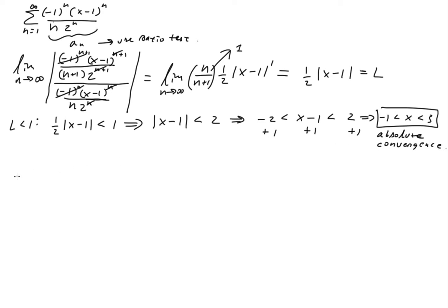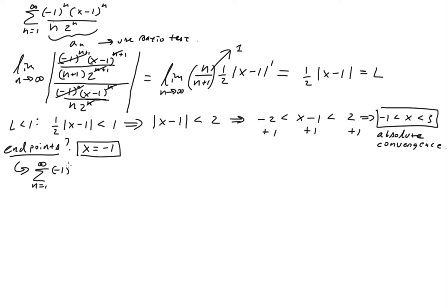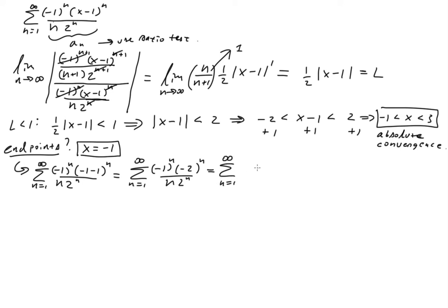Now we check the endpoints. First, let's check x equals negative 1. We sum from n equals 1 to infinity: we have negative 1 to the n, and we plug in x equals negative 1, giving negative 1 minus 1 equals negative 2, raised to the n power, all over 2 to the n times n. I'll simplify this step by step to make sure all the processes are clear.